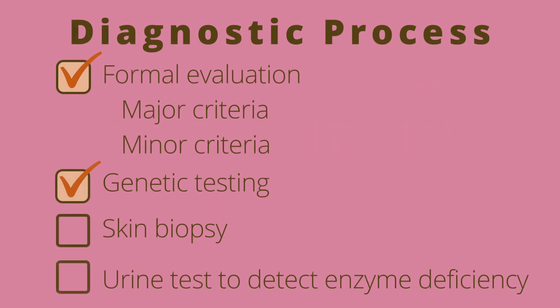We are going to review the new 2017 diagnostic criteria for Ehlers-Danlos Syndrome. Formal evaluation and genetic testing are required for a diagnosis, which include major and minor criteria. Skin biopsy is mentioned but is rarely used as it can only rule out other types of EDS. There is a urine test specific to this subtype of EDS, as it can detect an enzyme deficiency present in KEDS.